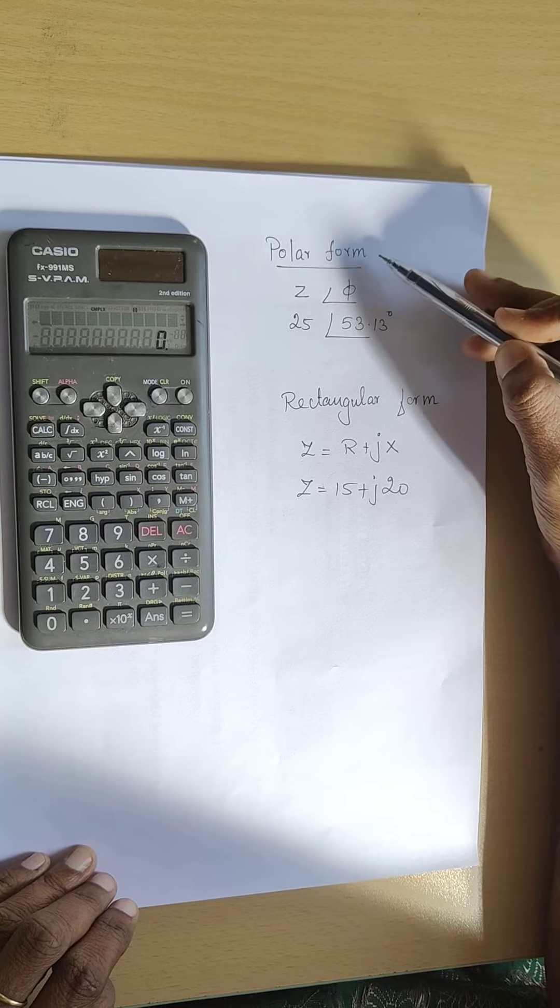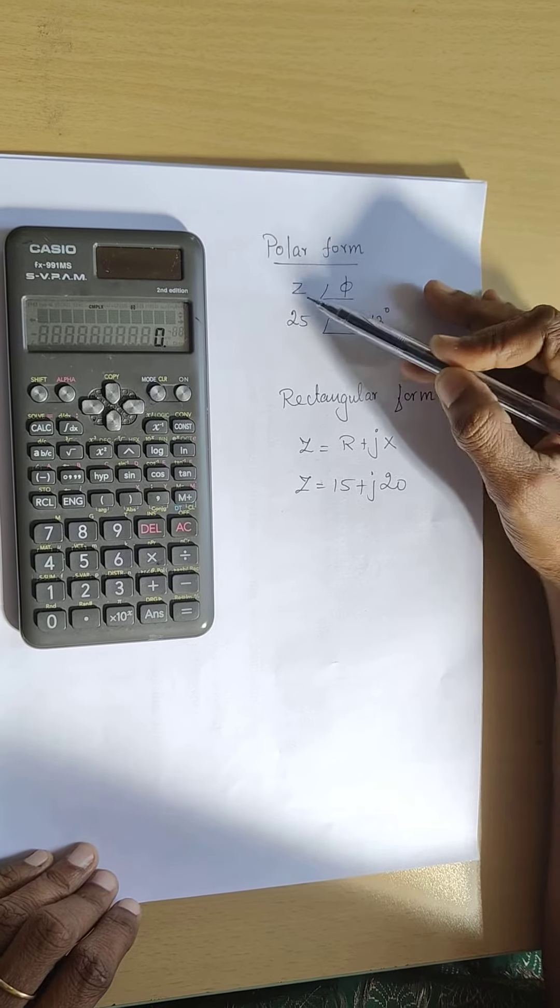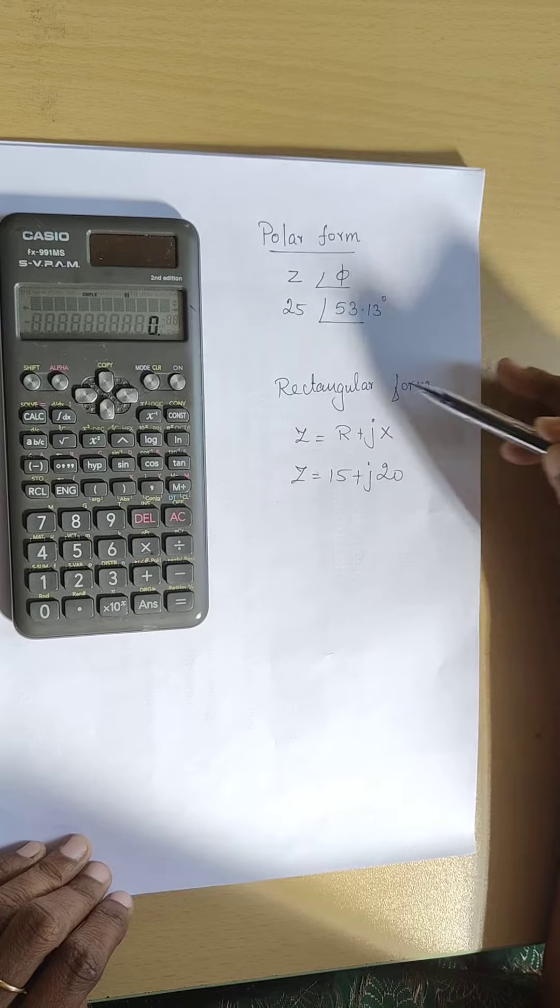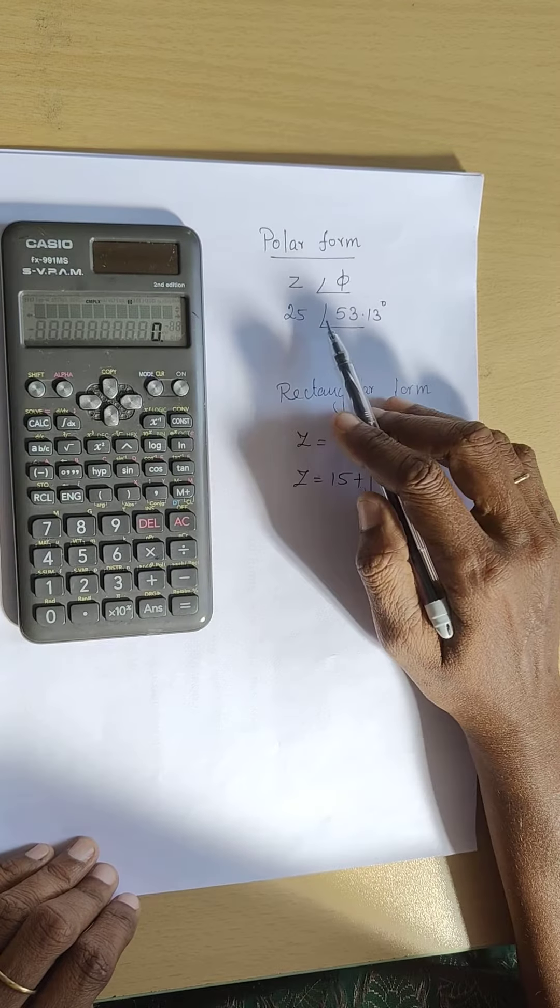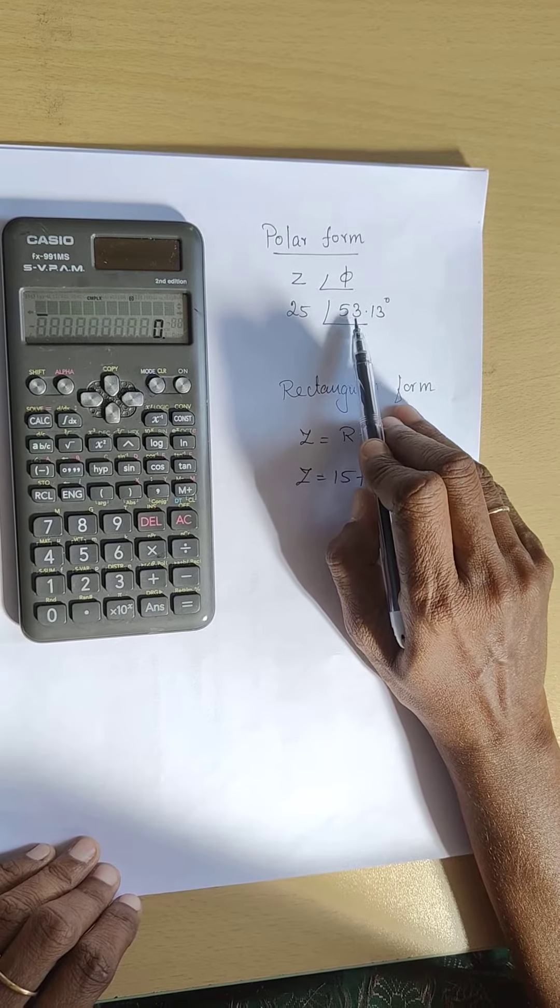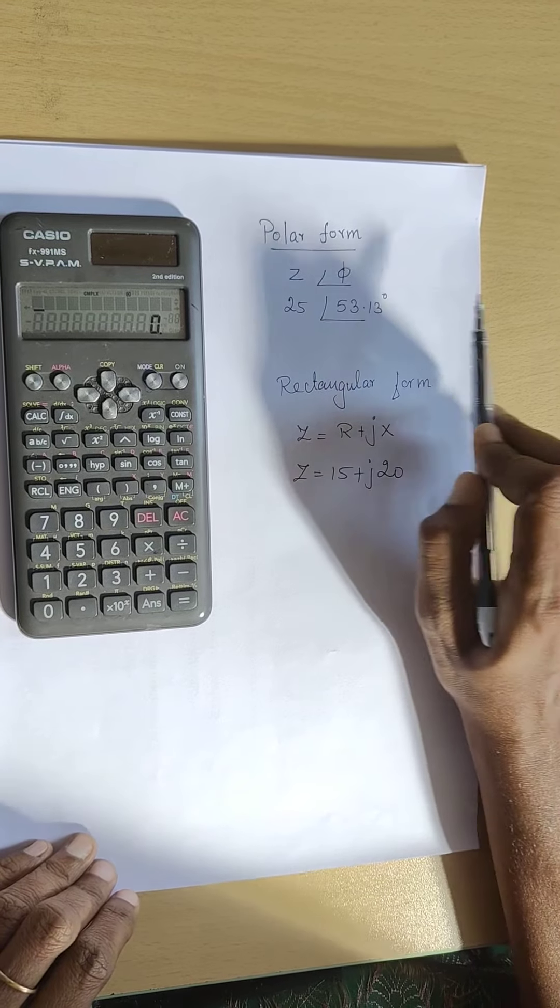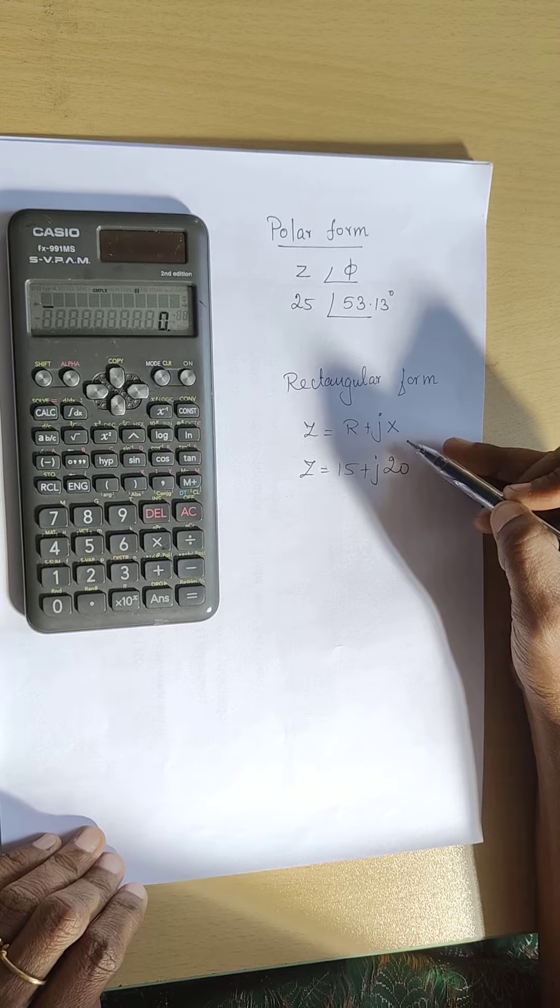In the previous video I showed you how to represent impedance in polar form, z angle phi, and rectangular form, r plus jx. Now we'll see how 25 angle 53.13 degrees is converted into rectangular form.